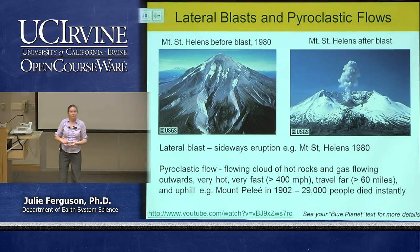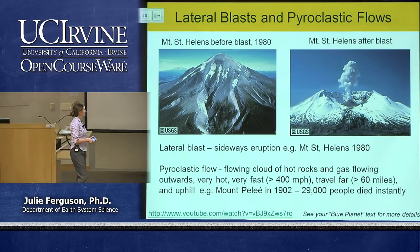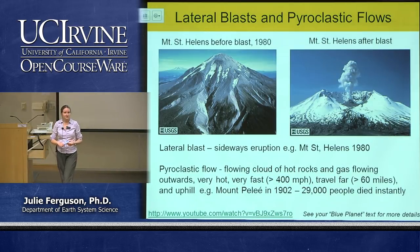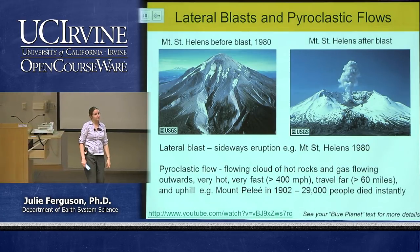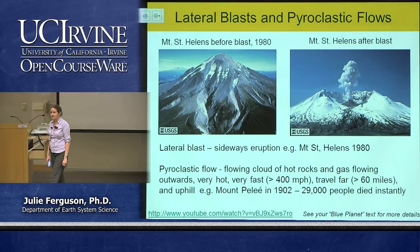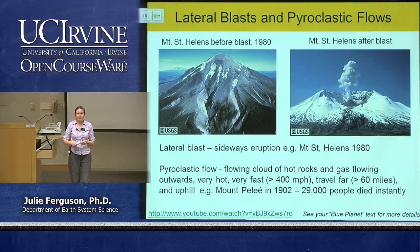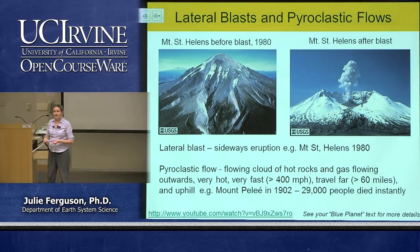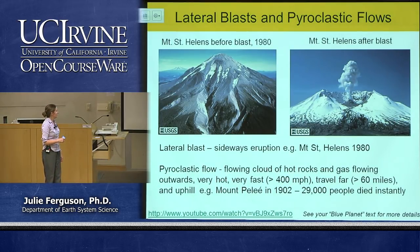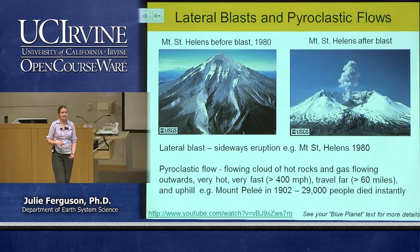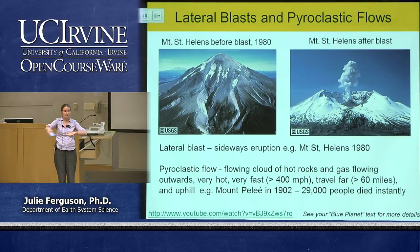Pyroclastic flows are truly terrifying — flowing clouds of hot rocks and gas, several hundred degrees Celsius. If you take a breath it basically cooks you from the inside out. They travel at up to 400 miles per hour, travel more than 60 miles, and will also go uphill — so unlike floods, going to higher ground does not necessarily save you. At Mount Pelée in 1902, 29,000 people were killed instantly when the pyroclastic flow hit the city just below the volcano.